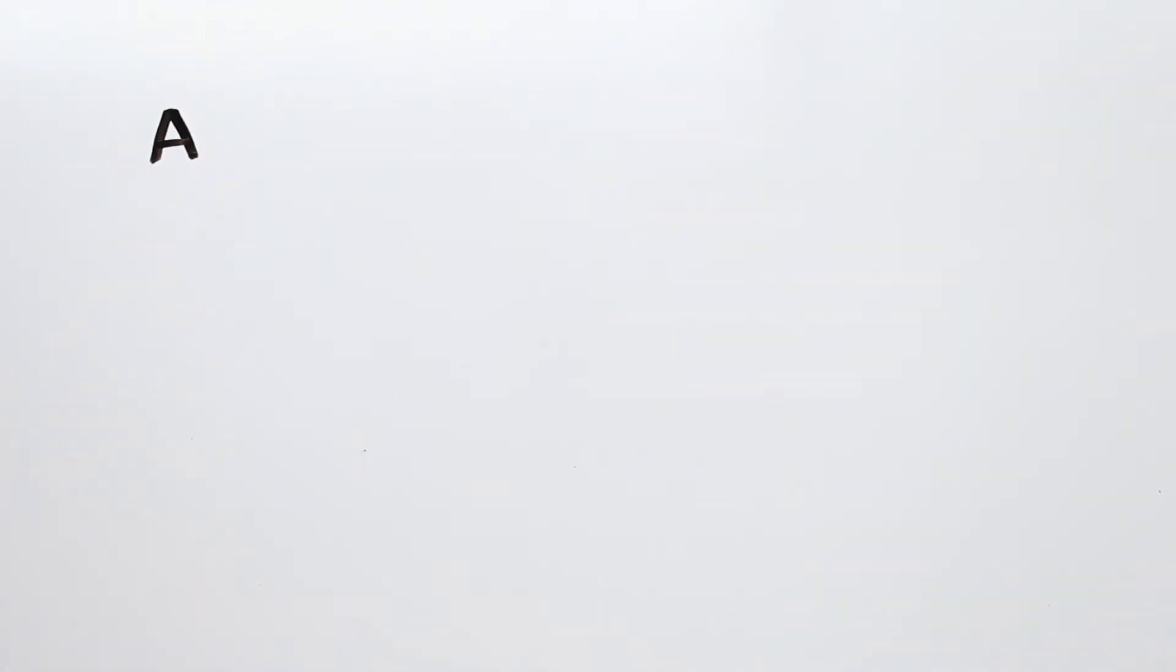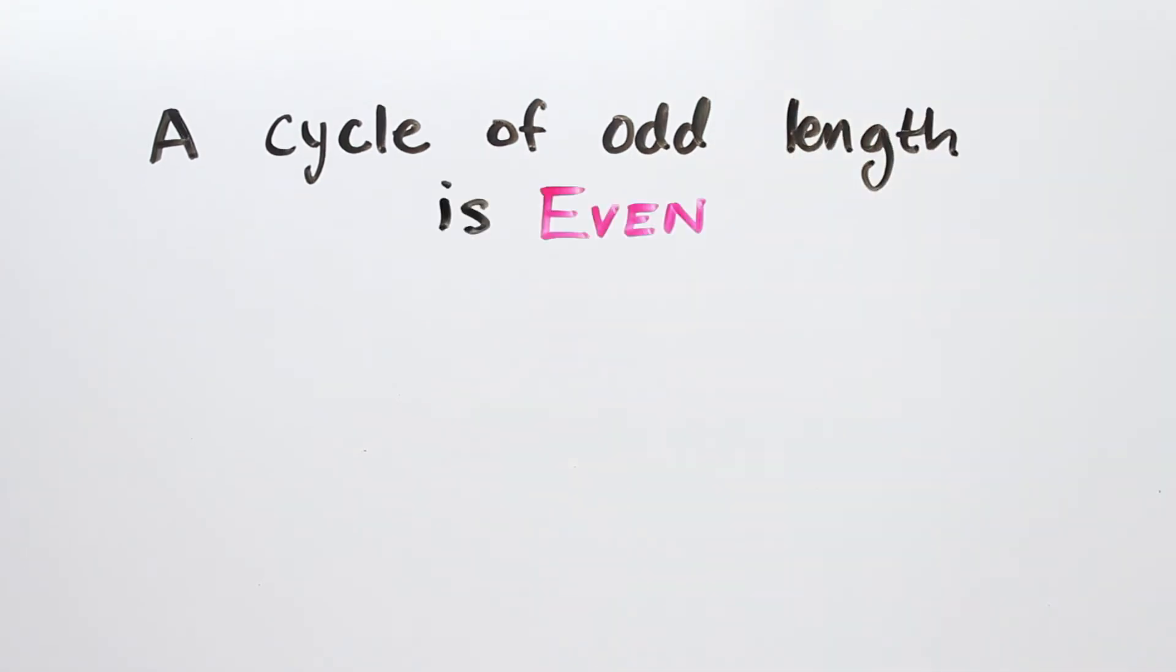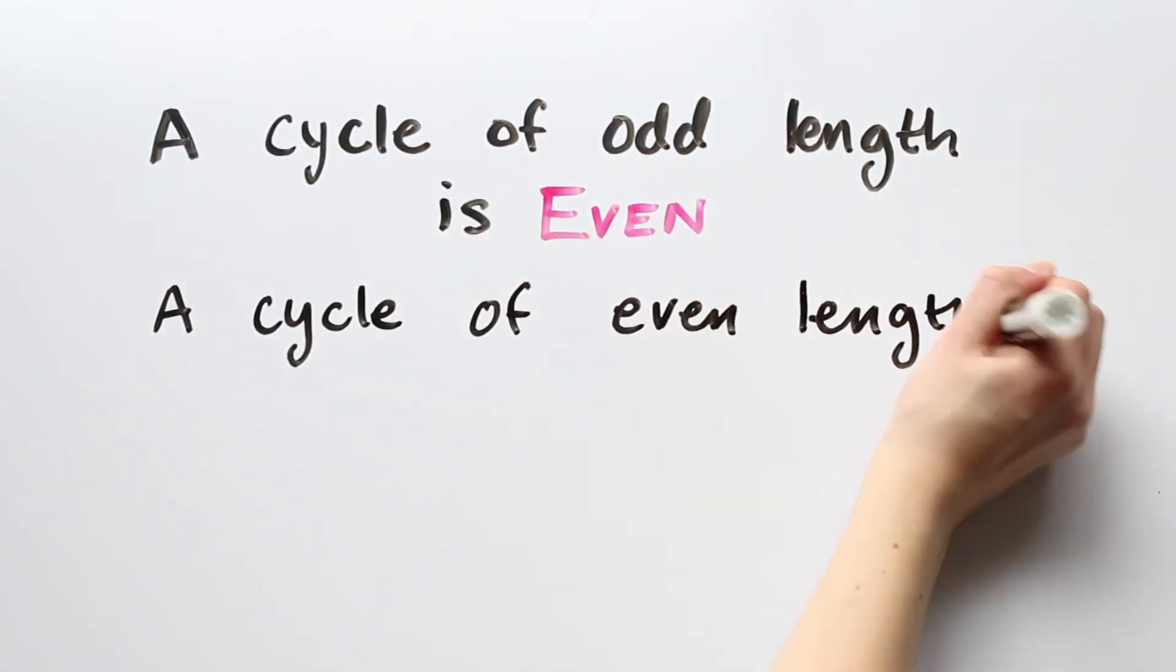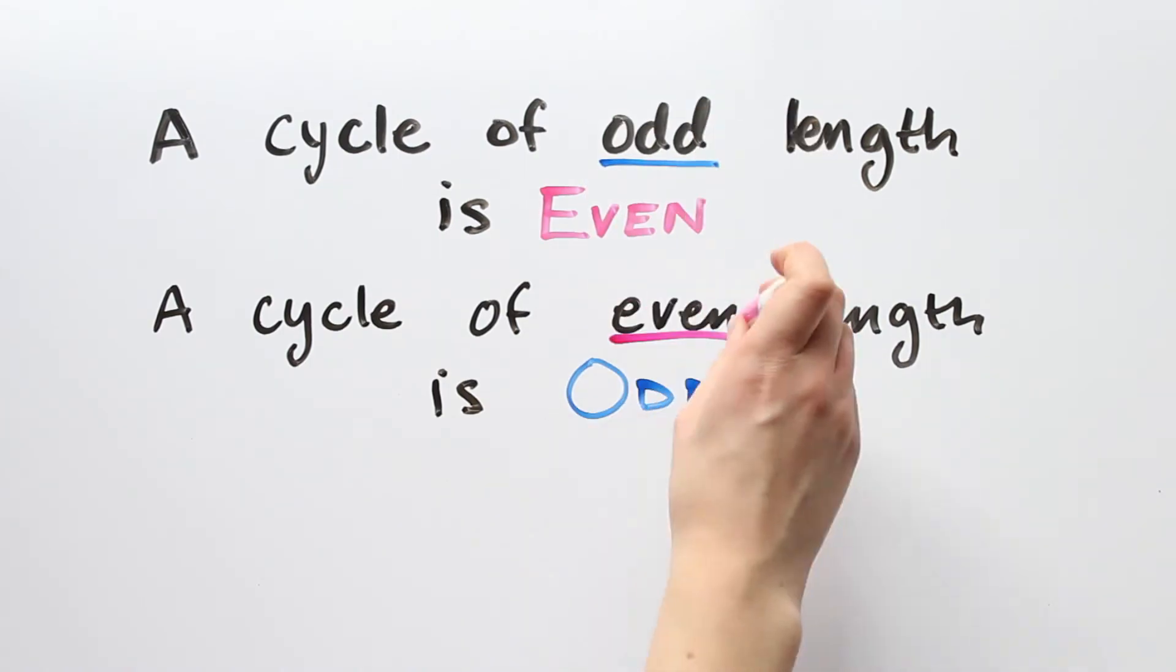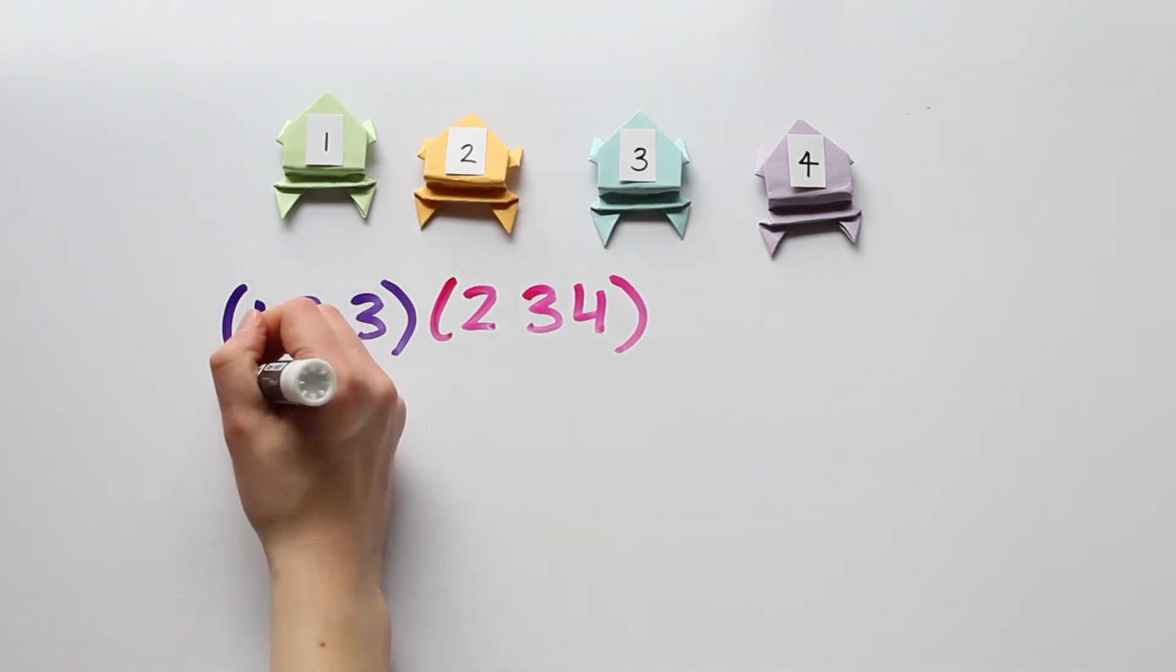That's a little confusing, so I'll say it again. A cycle of odd length is even, and a cycle of even length is odd.